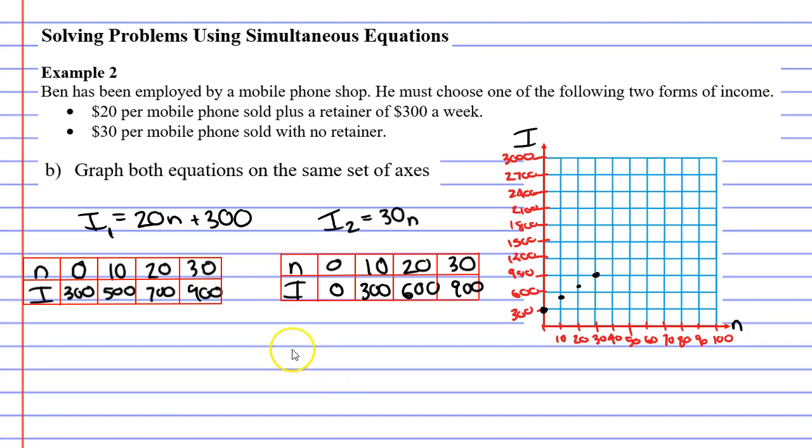And what would probably make it a lot easier is if I just went, what would happen if I sold 100 phones? Let's add an extra row in here, 100 phones. Well, it's $20 per phone, so 20 times 100 is $2,000 plus my retainer makes 2,300. We'll write that in. So if I sell 100 phones, I would reach $2,300 up here.